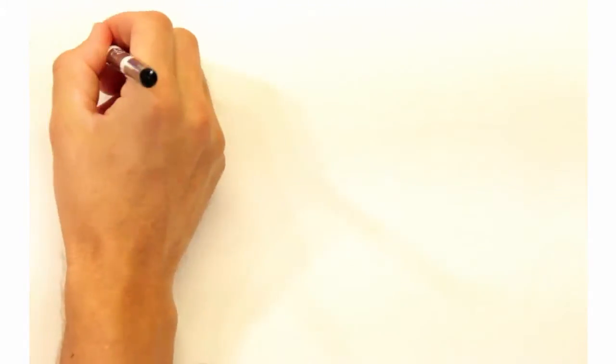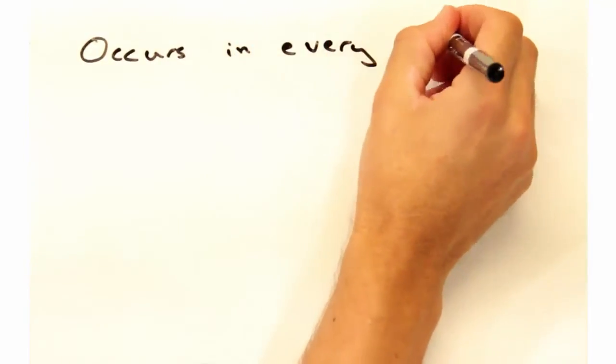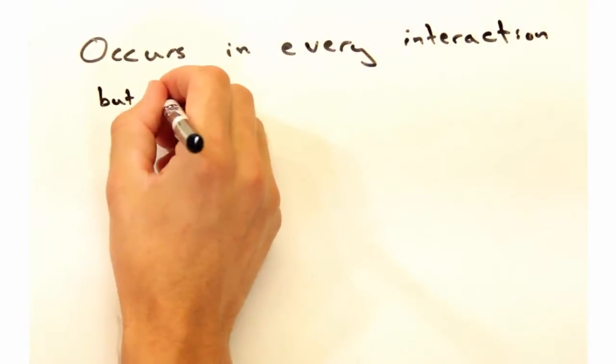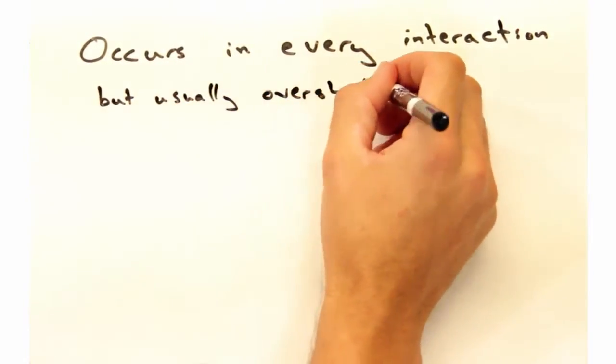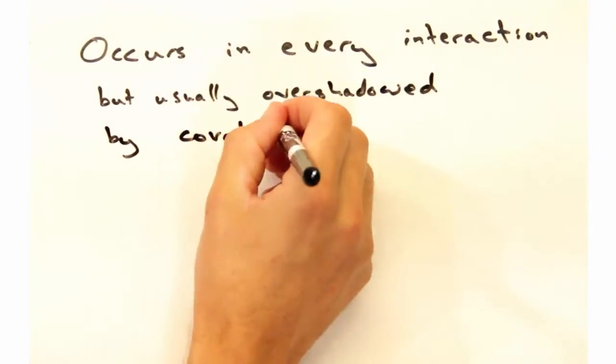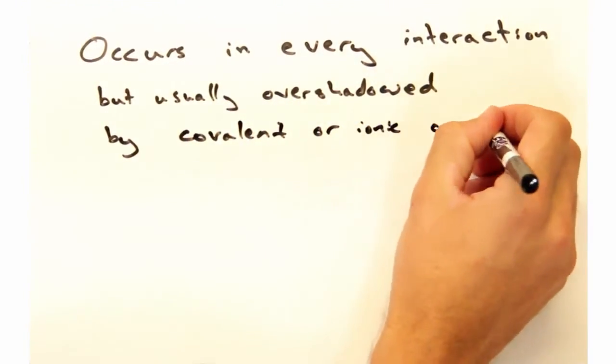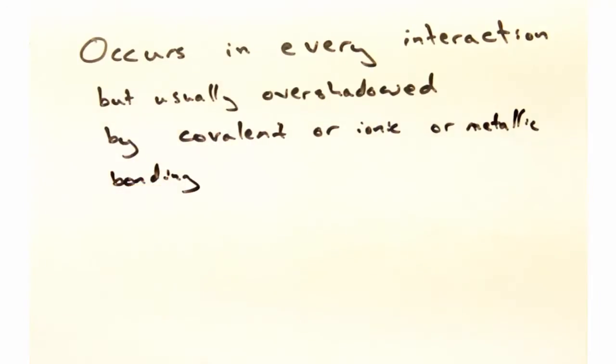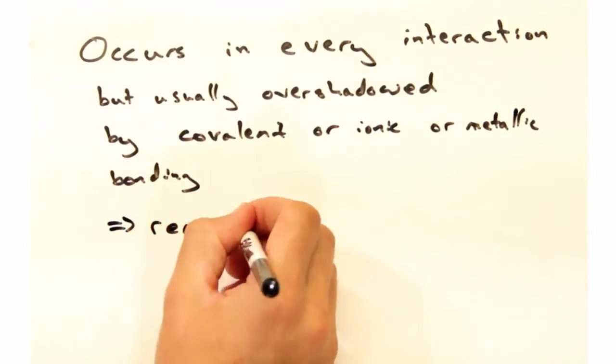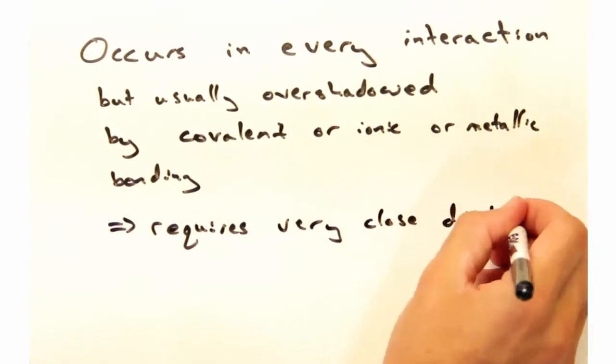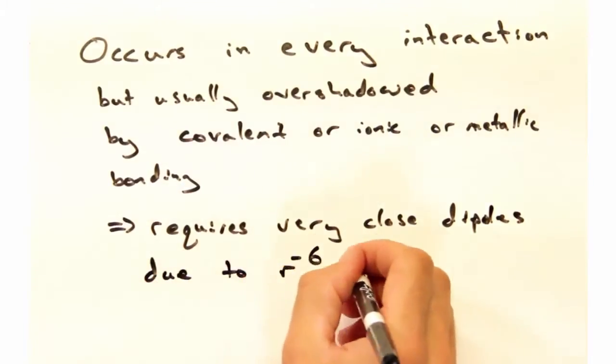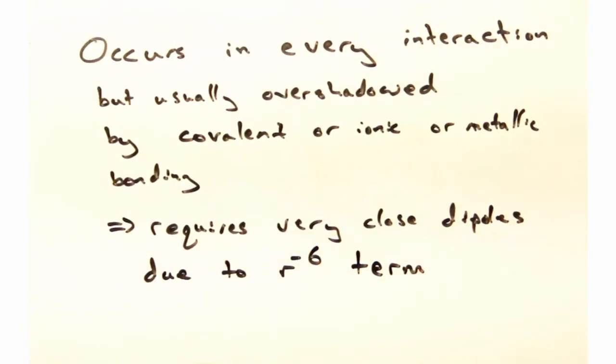So this type of bond occurs in every interaction. But we don't see it because other types of bonding like covalent or ionic bonding are at a much higher energy and overshadow the van der Waals bonds. Additionally, the distance term in the denominator seems to imply this interaction won't occur unless the atoms are extremely close to one another.